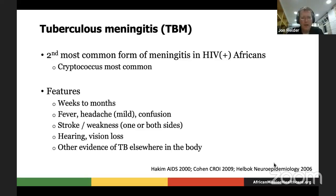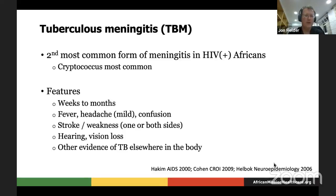TB meningitis is another difficult diagnosis to make. Epidemiologically, it's the second most common form of meningitis in the HIV-infected population in Africa — cryptococcus is the most common. Fortunately, with cryptococcus we do have a good test: the cryptococcal antigen, which can be done on cerebrospinal fluid or serum, and it's a good test either way. So sometimes someone comes in with a CNS syndrome for several weeks, their CD4 is low, and the first thing we think of is cryptococcus. If that's negative, the next thing we think of is TB.